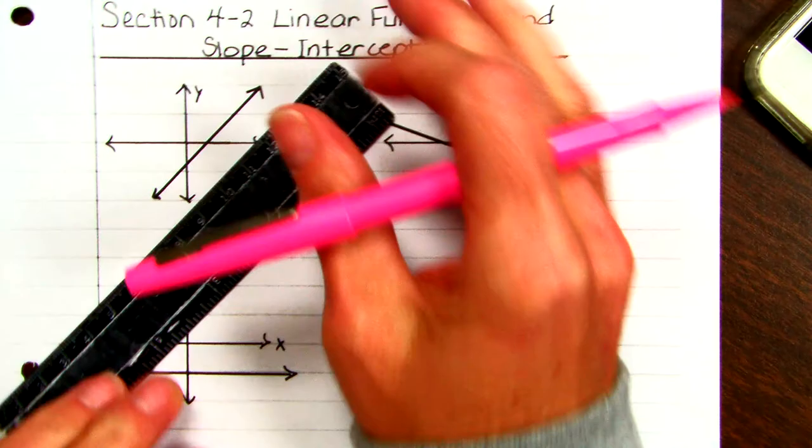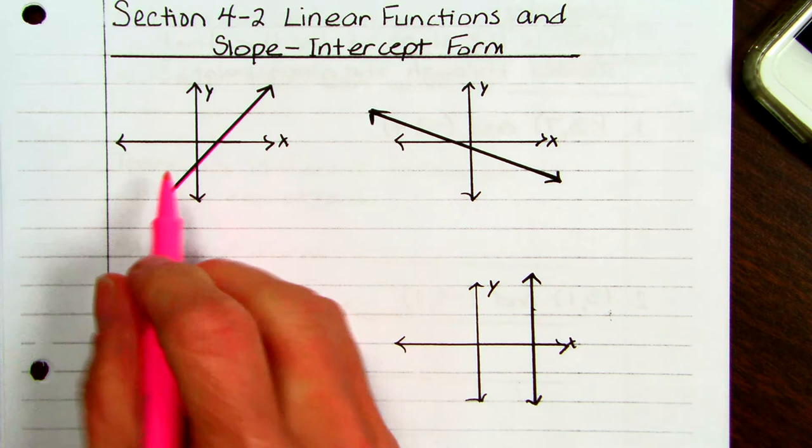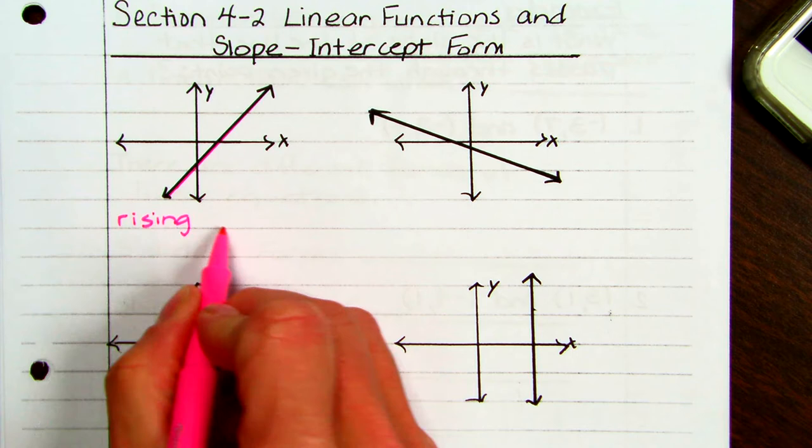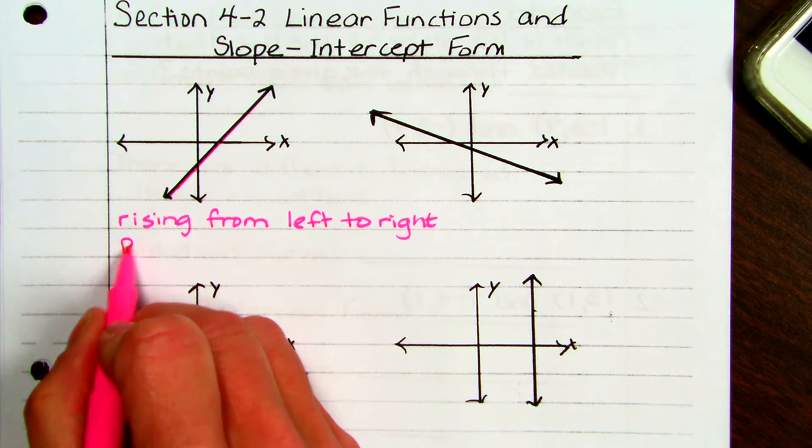In the first graph, you have a line that is rising from left to right. We read graphs left to right, so this line is rising from left to right. If the line is rising from left to right, it has a positive slope.